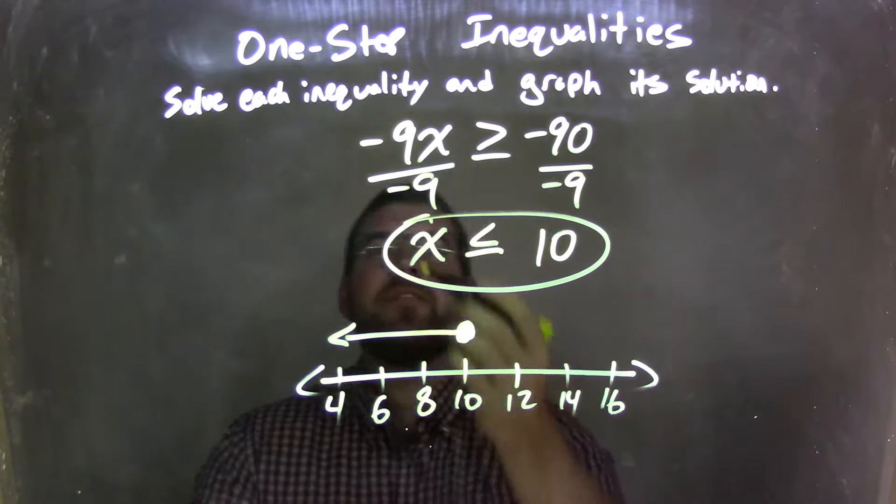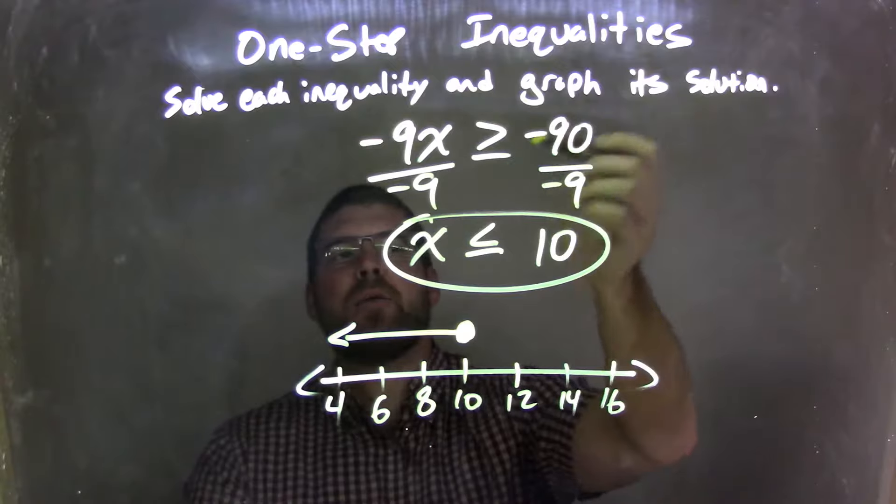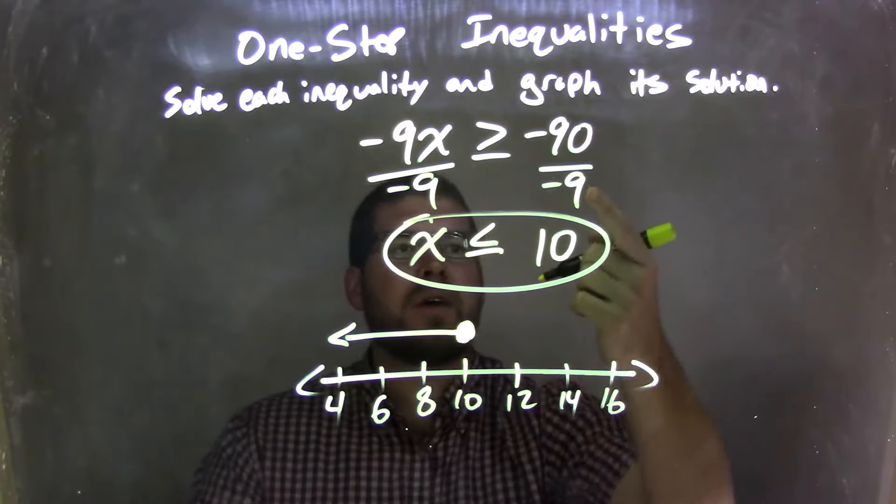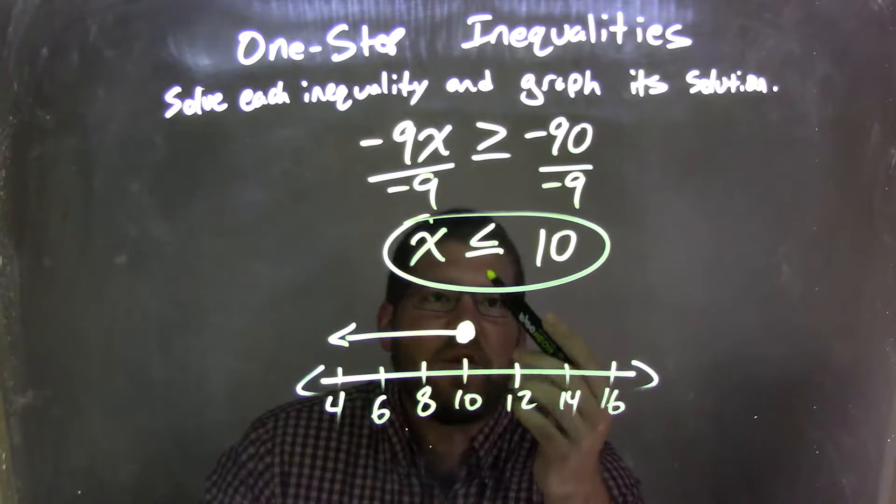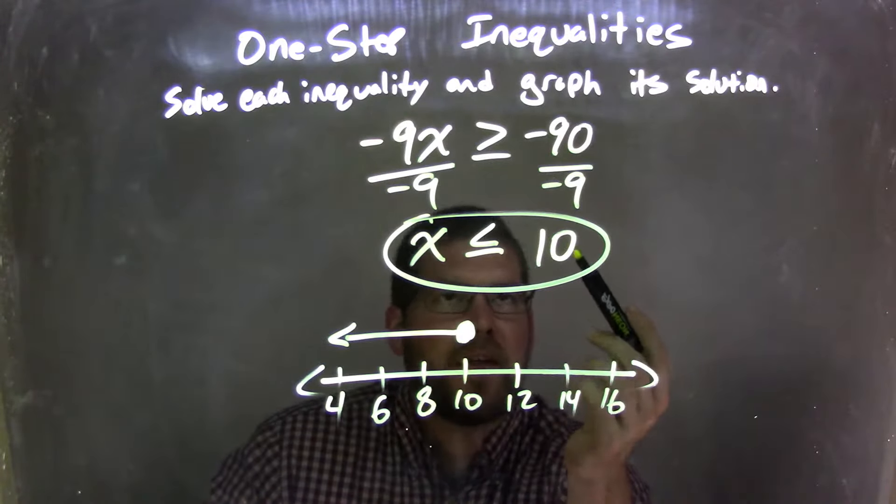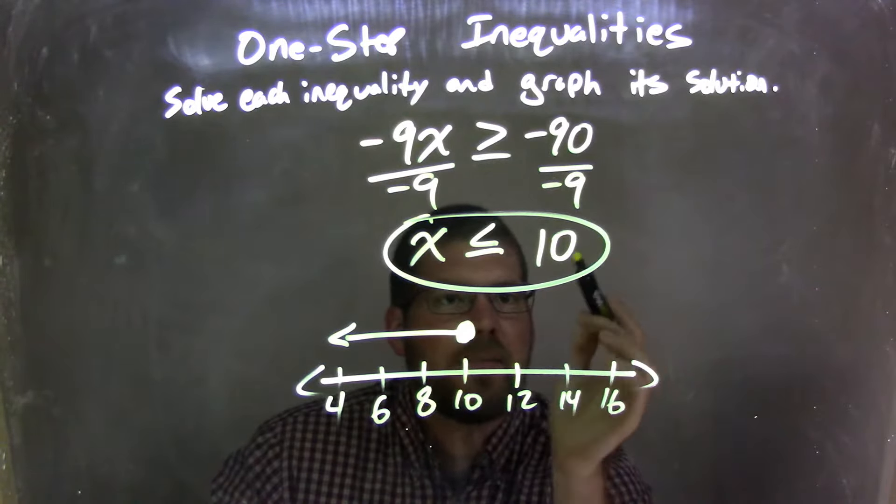So let's recap. We're given negative 9x is greater than or equal to negative 90. I divided both sides by negative 9, leaving the x by itself on the left is less than or equal to a positive 10 to the right. Negative 90 divided by negative 9 is a positive 10.